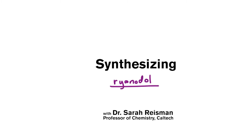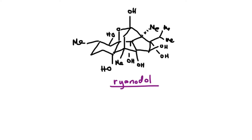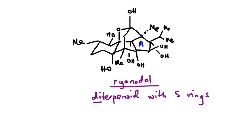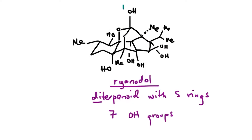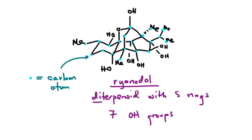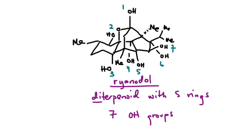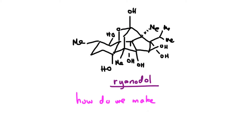This is a synthesis of ryanodol, which is a complex molecule derived from nature. An interesting part of the structure is that it has five rings and seven hydroxyl groups. It's really how you connect all the carbons to build up these rings and then add in the hydroxyl groups that makes ryanodol a really challenging molecule to make in the laboratory.